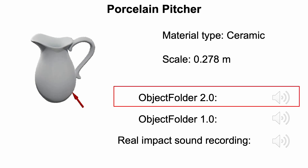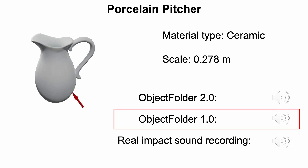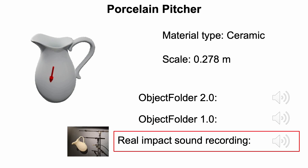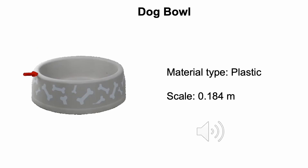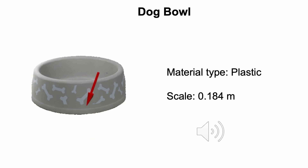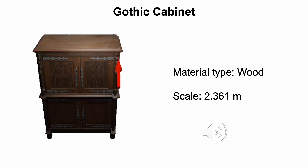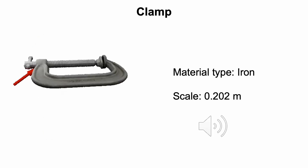Here is another example for a ceramic pitcher, showing sound from our proposed dataset, from Object Folder 1.0, and from a real impact sound recording. We also show more examples of the audio data for additional objects: a plastic dog bowl, a steel fry pan, a wooden Gothic cabinet, an iron clamp, and a ceramic teapot.